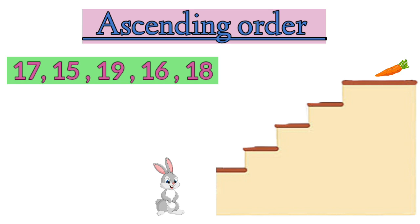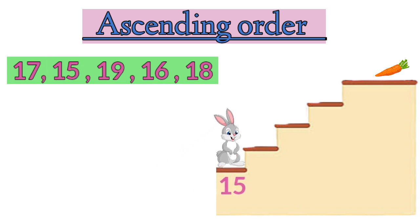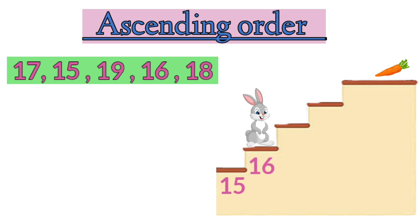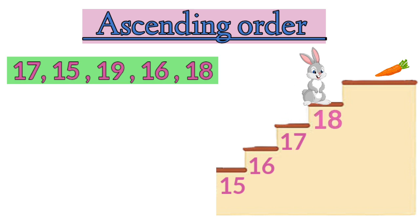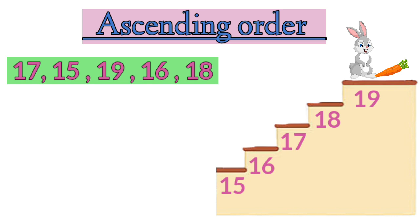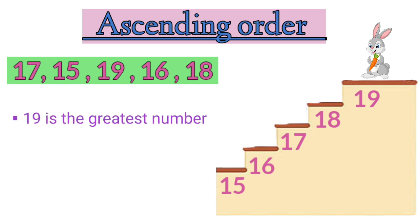So children, let's all help Mr. Bunny to go upstairs and get his carrot. Among the given numbers, which number do you think will come first? Yes, the smallest number will come first. So the smallest number is 15, then comes 16, next is 17, followed by 18, and lastly 19. Mr. Bunny got his carrot! Among all the numbers, 19 is the greatest number and 15 is the smallest number.